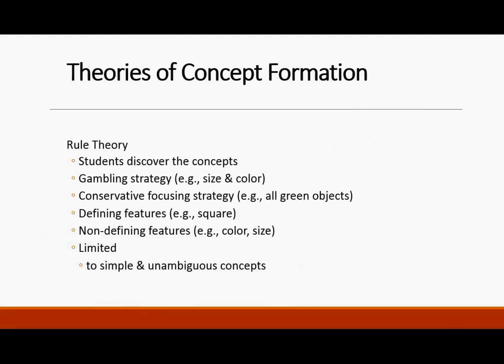Theories of concept formation: the rule theory says that students discover concepts through different strategies — maybe a gambling strategy, a conservative focusing strategy — putting things in categories based on defining features like all the square things, or some non-defining feature, which is less common. The idea is that it's limited to simple and unambiguous concepts. We do have rules for how we put things into categories.